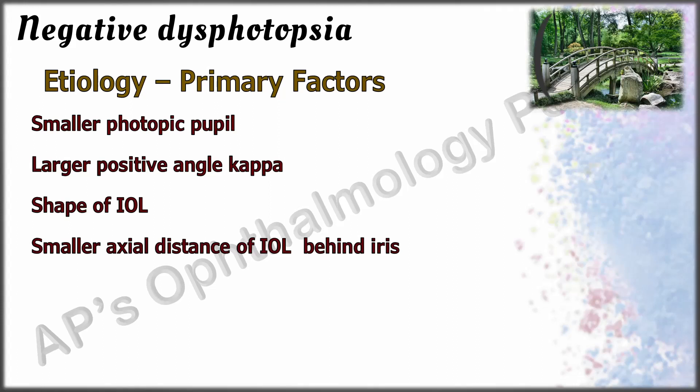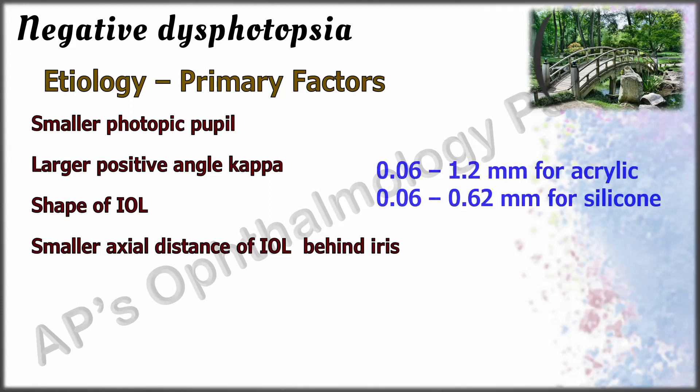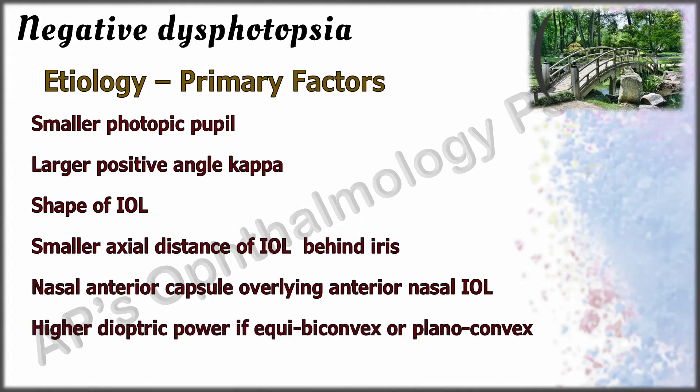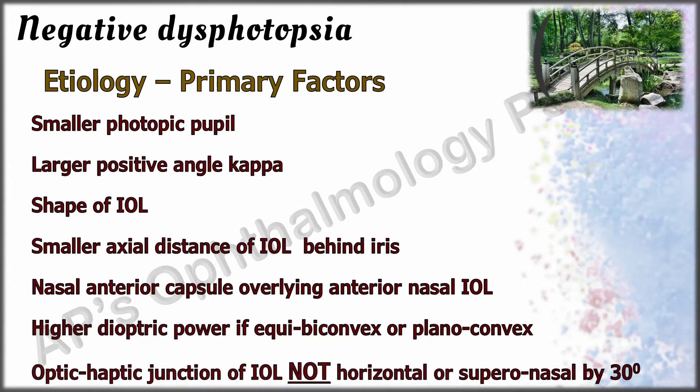According to Holliday, a distance behind the pupil of between 0.06 and 1.2 millimeters for acrylic, and 0.06 and 0.62 millimeters for silicone, is more associated with negative dysphotopsia. Nasal anterior capsule overlying the anterior nasal IOL, higher dioptric power if equibiconvex or planoconvex, and horizontal or preferably superonasal orientation of the haptics reduces the risk for negative dysphotopsia.